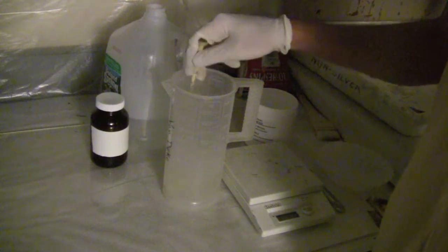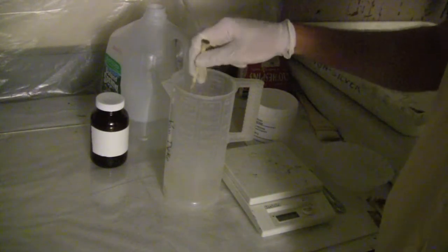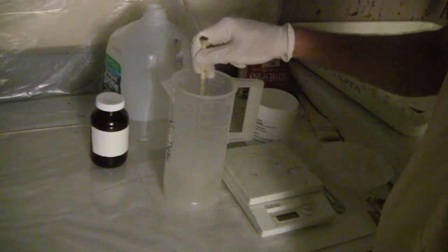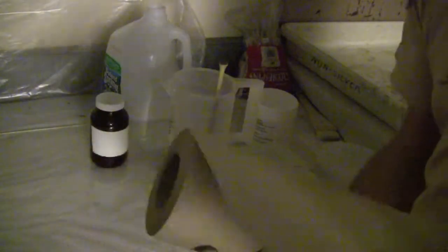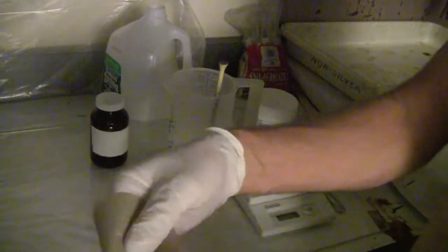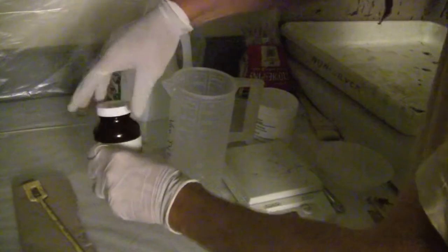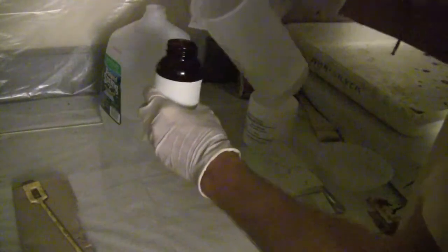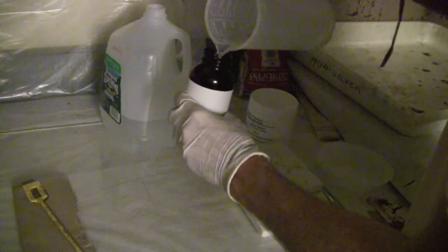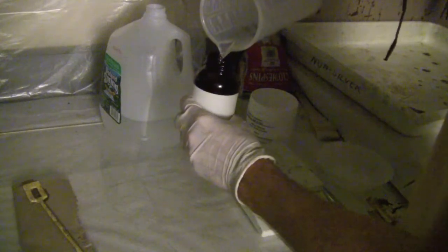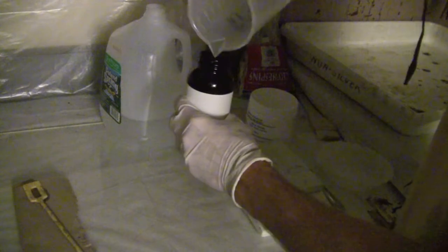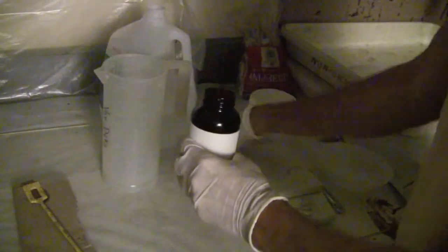We'll give it another stir and then we're going to be pouring it into our amber bottle. I'm just going to place our stirring stick on a folded piece of paper just to keep it from contaminating our working surface. There we go, and we'll get the lid on.